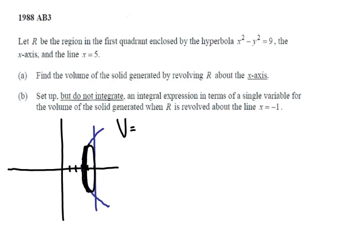Remember that the volume of the disk is just πr²h, where h is the dx here. So V equals π times the integral from 3 to 5 of r². We need to solve that hyperbola for y, and that's just y = √(x² - 9). So that's πr².